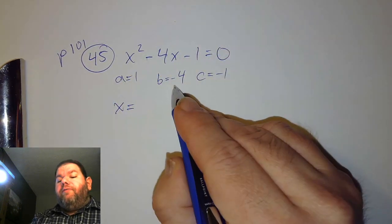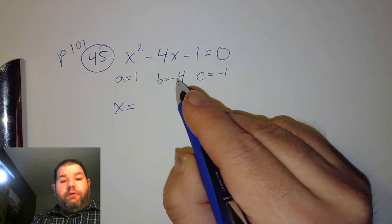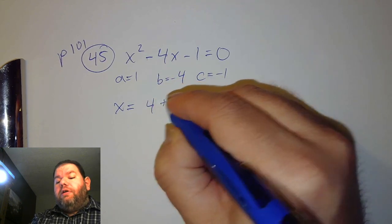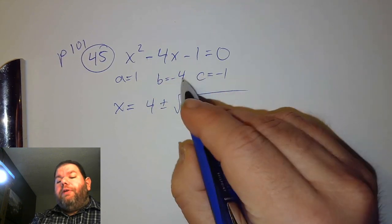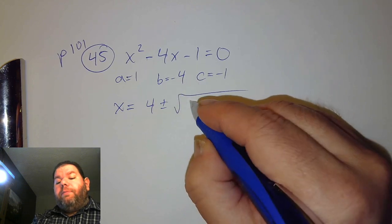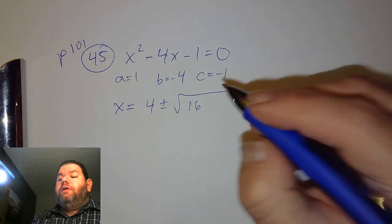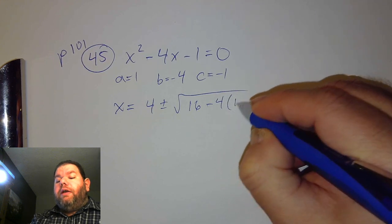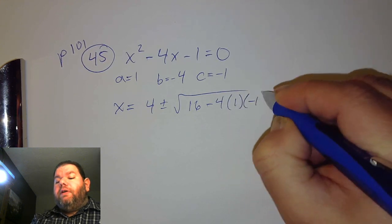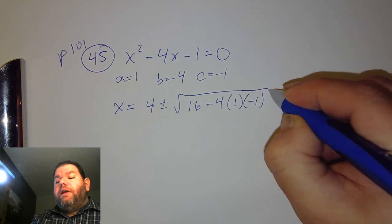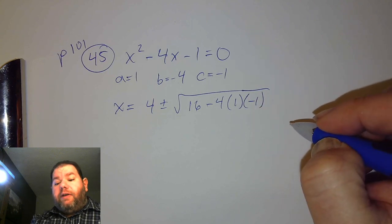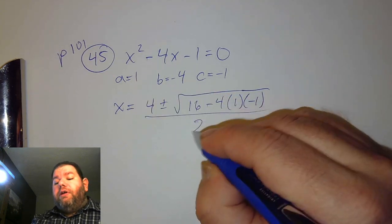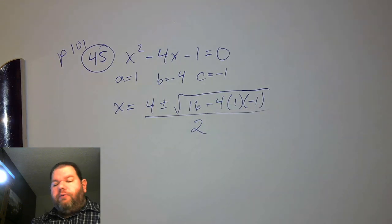Negative b — the opposite of b — would turn that into a positive 4. Then b squared: if we square negative 4, it's positive 16, minus 4 times a times c, so plug in a is 1, c is negative 1. And then 2 times a, 2 times 1, will just be a 2 on the bottom.